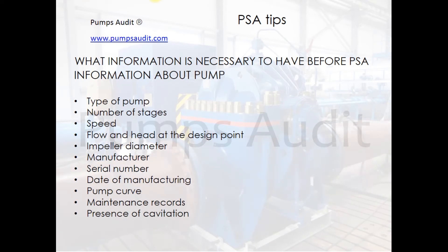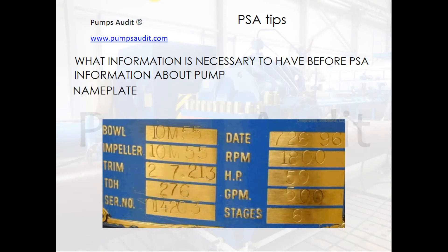The list of information about the pump is presented here. There are different sources where we can get it: the pump nameplate, test report, catalog, manual, and other documentation supplied with the pump. This is an example of a pump nameplate where we can find main information about the pump. We can also request information about the pump from the manufacturer.